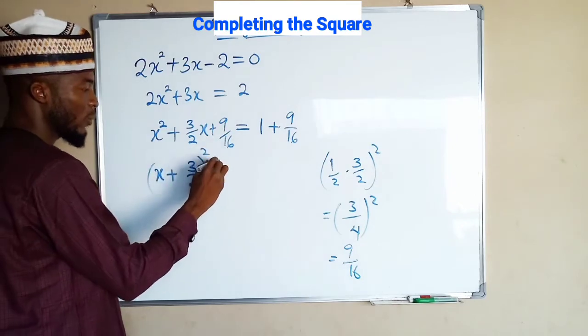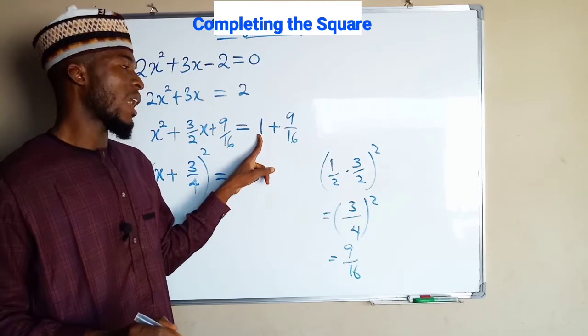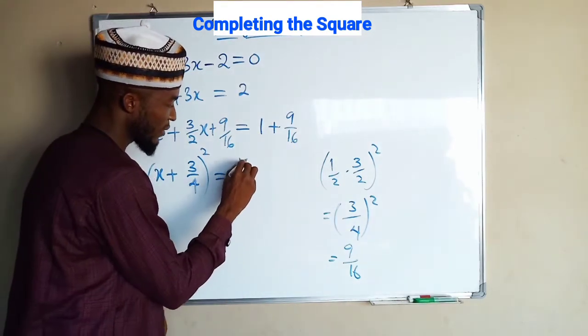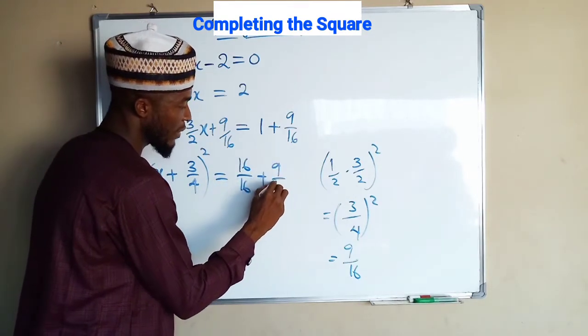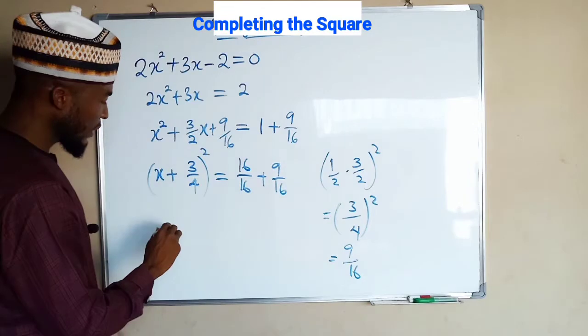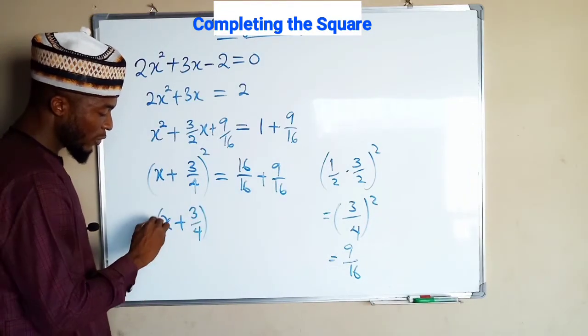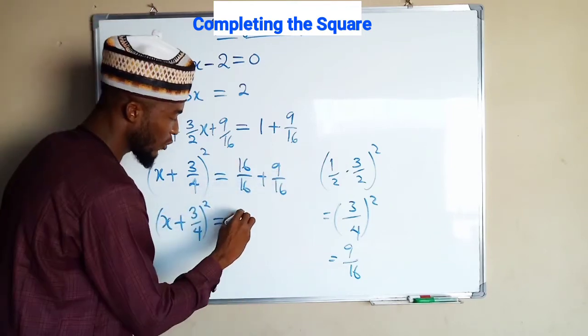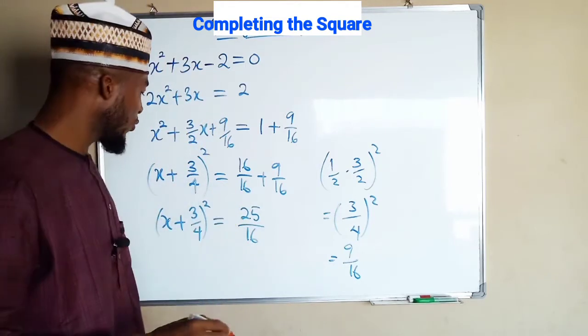And to the right-hand side, you know we can write 1 as 16 over 16 because of this 16. So we have 16 over 16 plus 9 over 16. x plus 3 over 4 from the left-hand side all squared. This is equal to, this plus this is 25, divided by 16 because they have common denominator.